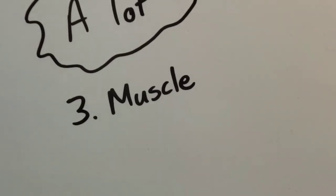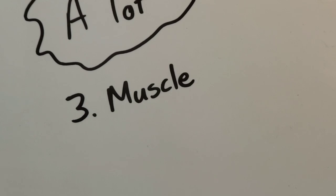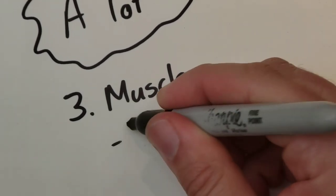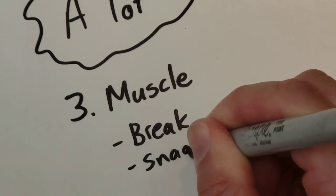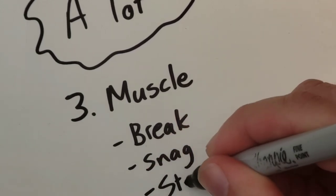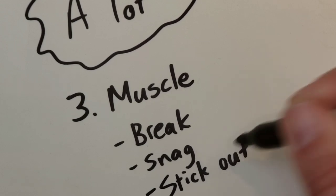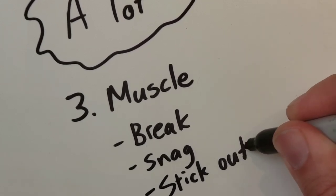What's the worst that could happen is you learn that you're forcing it in a direction it doesn't want to go and it could break. It could snag. It could stick out and be dangerous, in which case you can't sell the piece or use it.